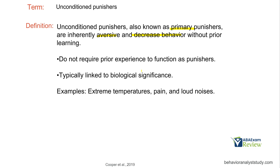Primary punishers are things we typically try to avoid. Extreme cold, extreme heat, not having enough food — these are primary punishers we're going to try to avoid because biologically we're programmed to not want to engage with them. If we do engage with those consequences, they typically will punish some behavior. Some examples include extreme temperatures, pain, and loud noises. Don't overcomplicate unconditioned punishment — it's not that difficult of a topic, so go in-depth but keep it simple.